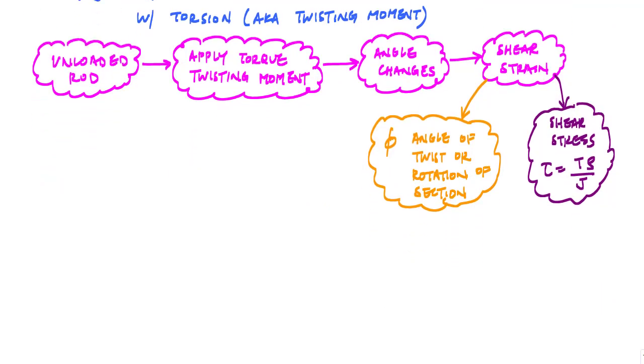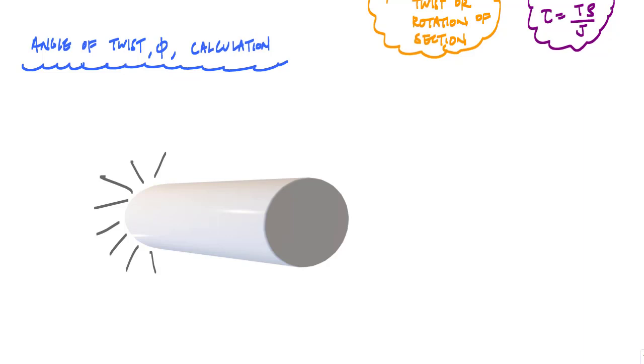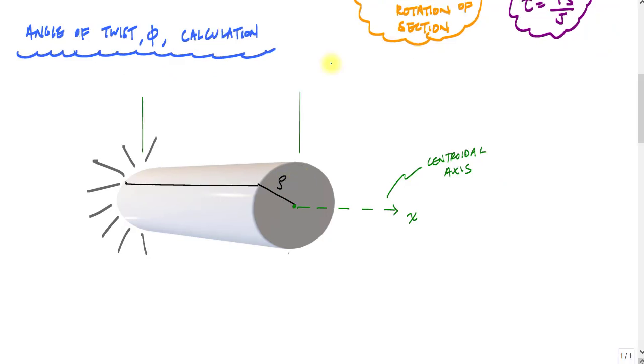All right, let's see how we actually come up with a number for this angle of twist. Let's consider a rod that's fixed on one end. And right now, it's not loaded at all. It's got a center, a centroidal axis, if you will, right here. And if I look at an undeformed line from the end of the fixed rod here, we'll say it goes from here all the way from the fixed end to the front here. Radius from the center to that edge or the outer surface of the cross section, we'll call this rho. This rod has a length L like this. And what we're going to do is we're going to apply an external torque, a twisting moment to the end here.